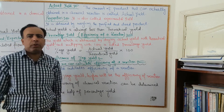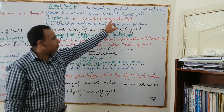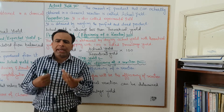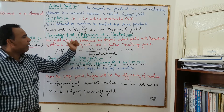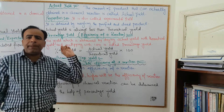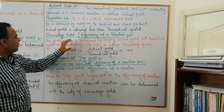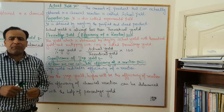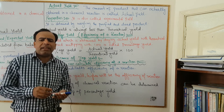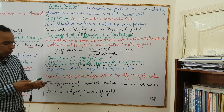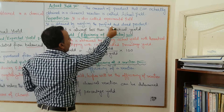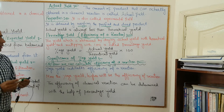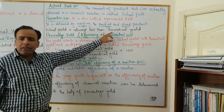Now, what is actual yield? Actual yield is also called experimental yield. The amount of product that is actually obtained in a chemical reaction is called actual yield. Actual yield is always less than theoretical yield.